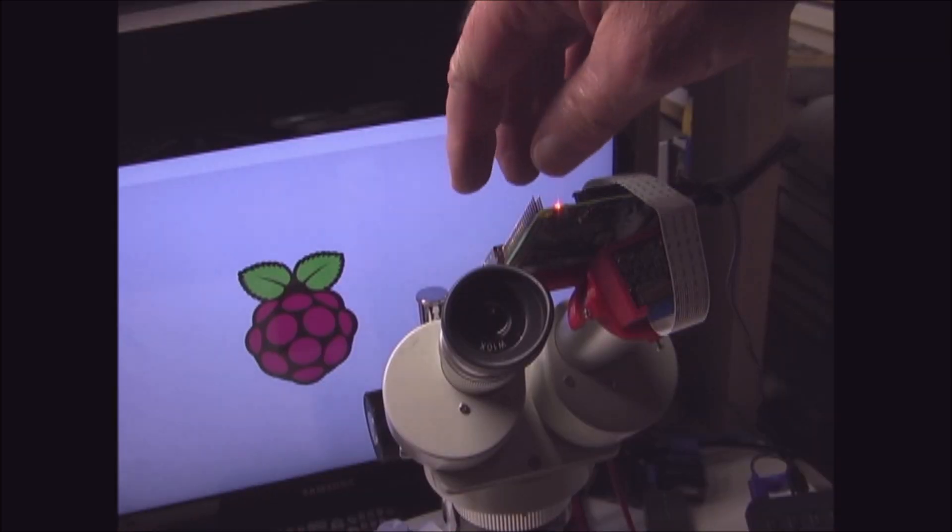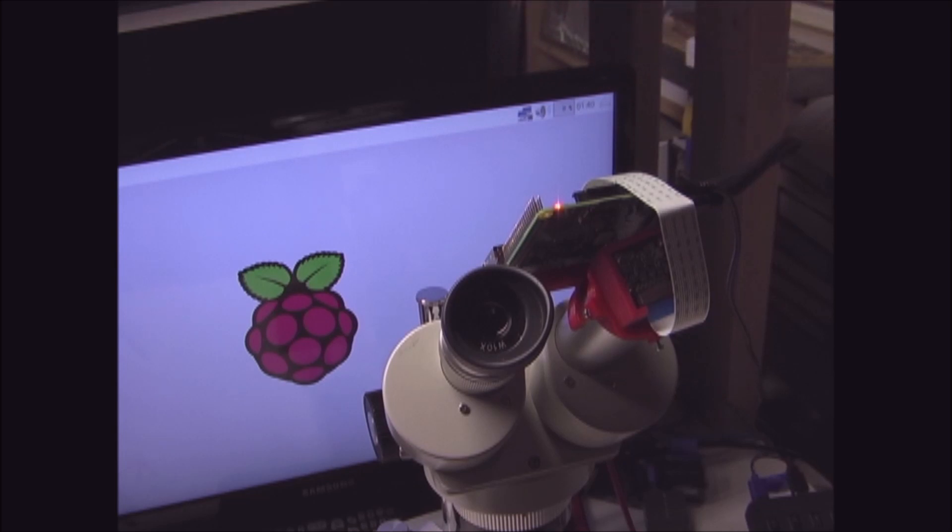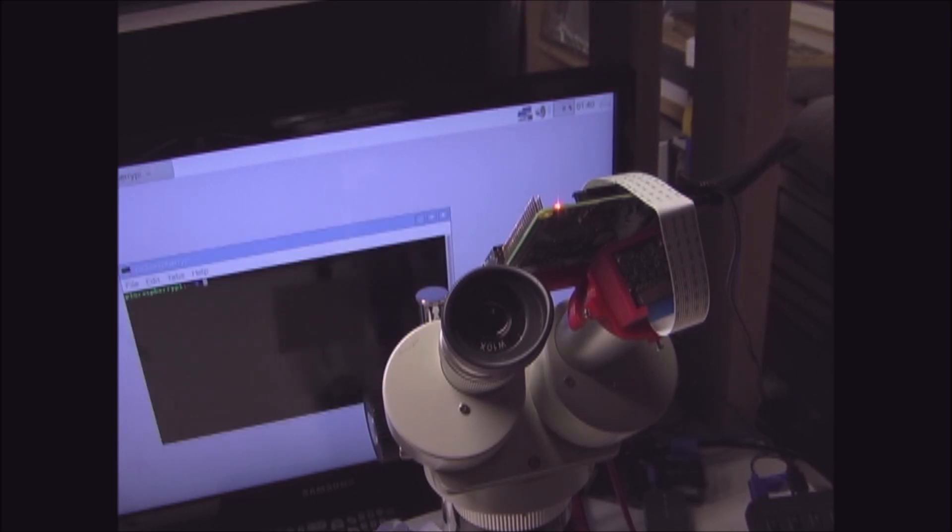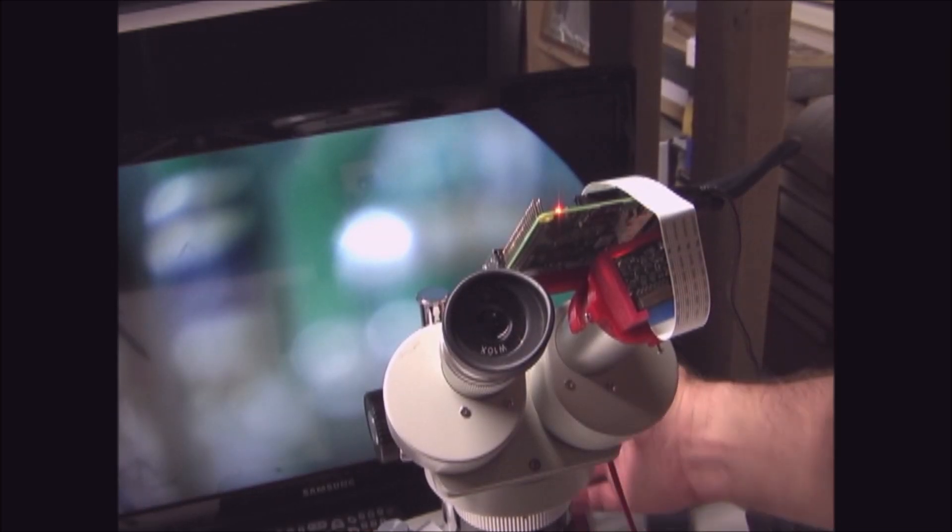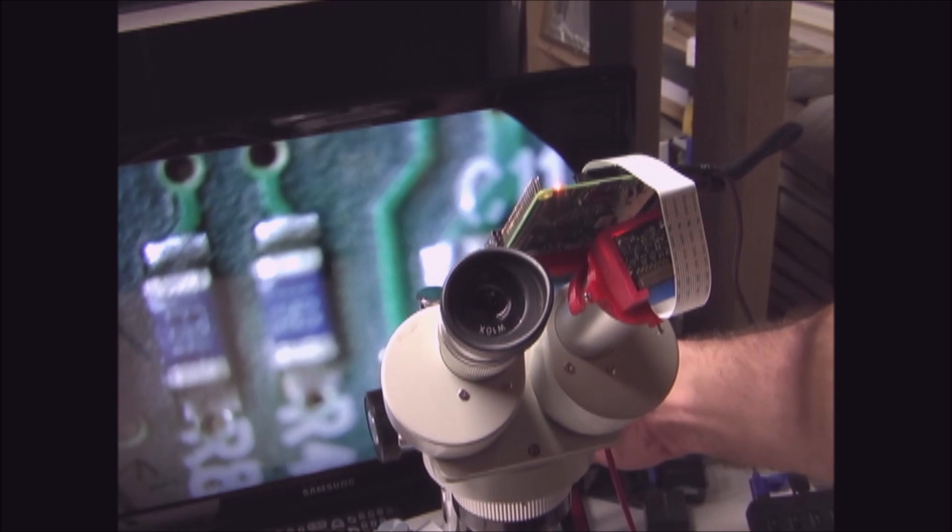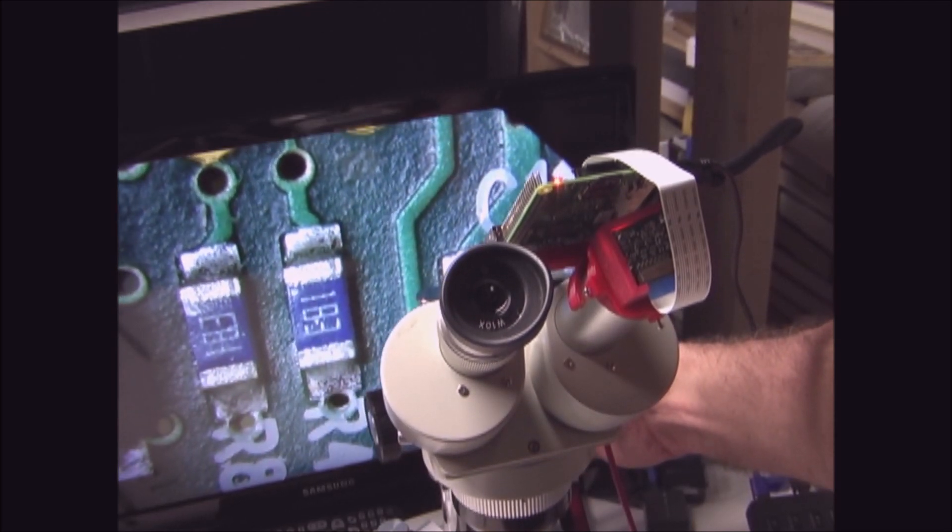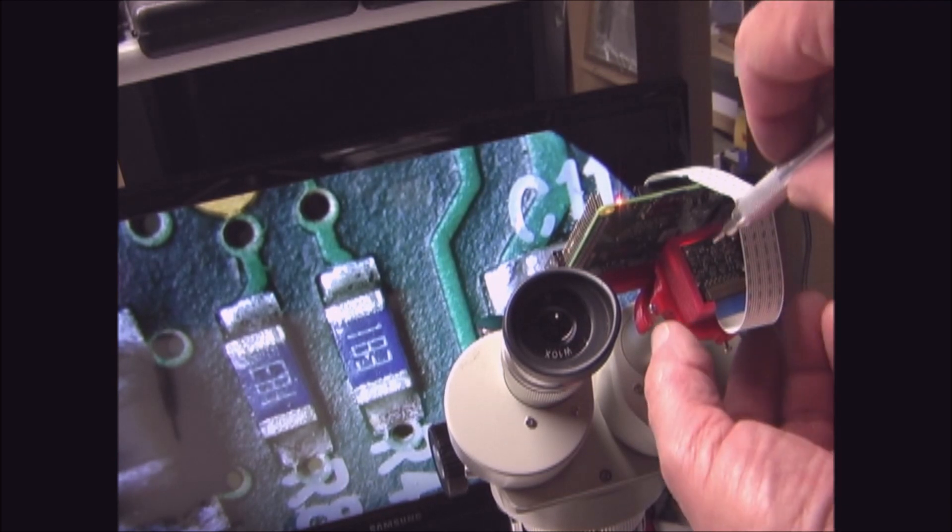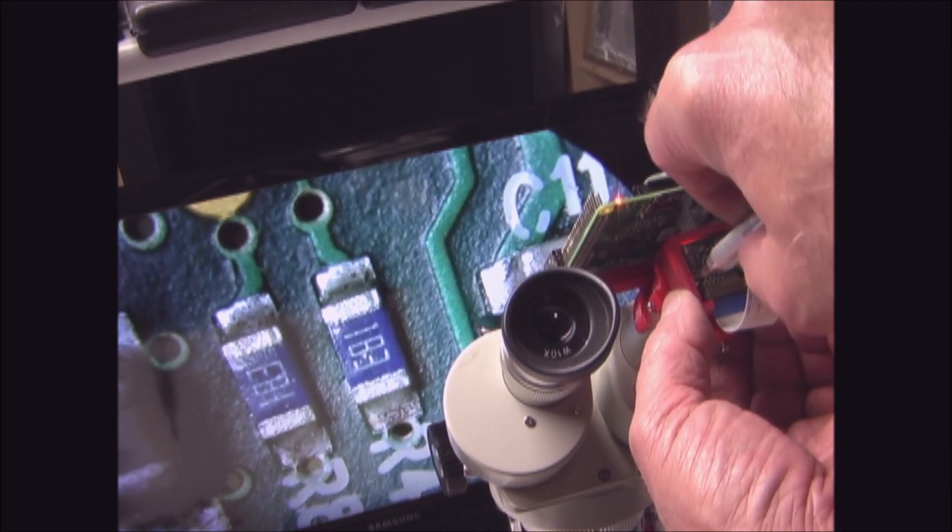Now that I have the Raspberry Pi and the camera attached to the microscope, I'm going to turn on the camera. And now I'm going to adjust the microscope. Next I'll fine tune the camera mount and the lens.